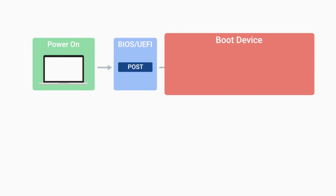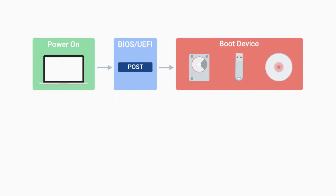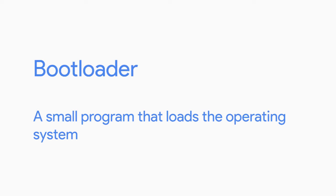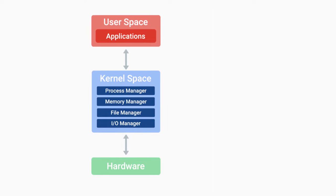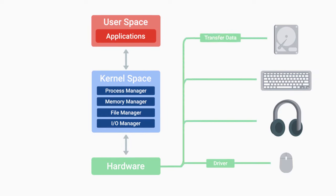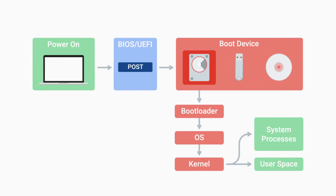Next, depending on the BIOS/UEFI configuration, a boot device will be selected. Devices attached to our system — like hard drives, USB drives, CD drives — are configured in a certain boot order. The computer searches for what's known as a bootloader, which is a small program that loads the operating system. Once the computer finds a bootloader on a device in the listed order, it'll start to execute this program, which loads our operating system. Once the bootloader loads up the operating system, our kernel gets loaded — the kernel controls access to our computer's resources, loads up drivers, and allows our hardware to talk to our software. Next, essential system processes and user space items are launched, like user login and spinning up a desktop environment, which basically allows us to interact with our system.